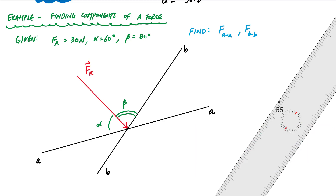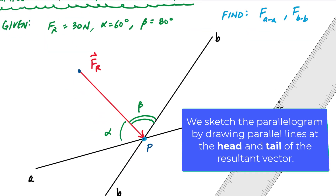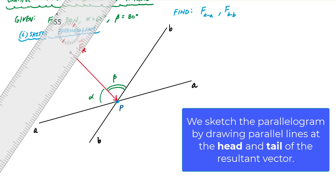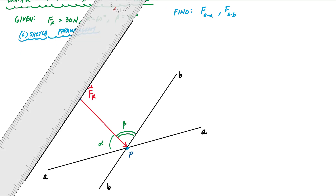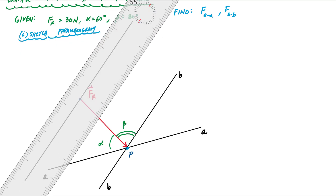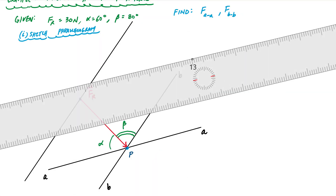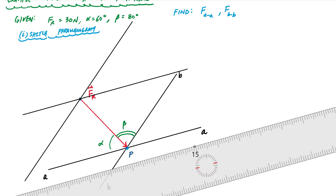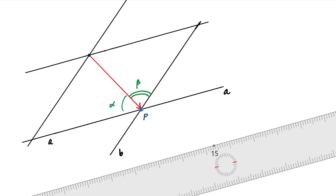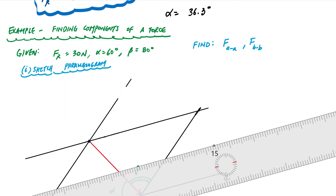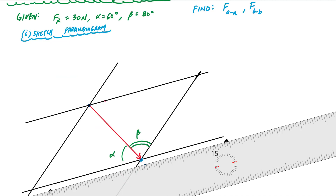I have a resultant force of 30 newtons, alpha is 60 degrees and beta is 80 degrees, and we'd like to find the components along lines AA and BB. The resultant points to the tip, and the concurrent point is at the tail. The first thing I need to do is sketch my parallelogram. When you're using the parallelogram law, there's no substitute for a good drawing — make sure you have a straight edge and protractor.